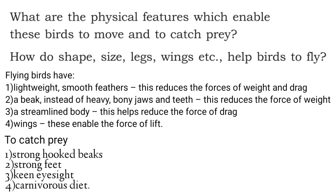Next, the features to catch prey. The first one is strong beaks. The second one is strong feet. The third one is keen eyesight. The last one is a carnivorous diet — because they eat meat, their diet is suited to digest that type of meat. So these are the physical features which enable birds to move and catch prey.